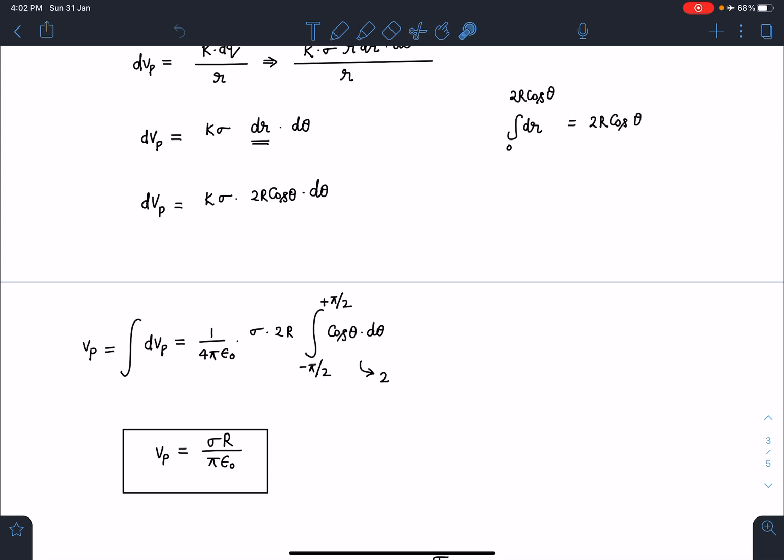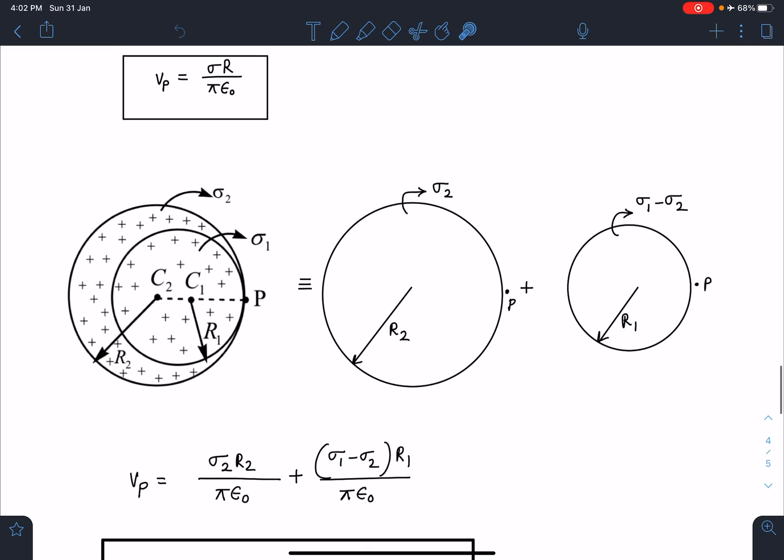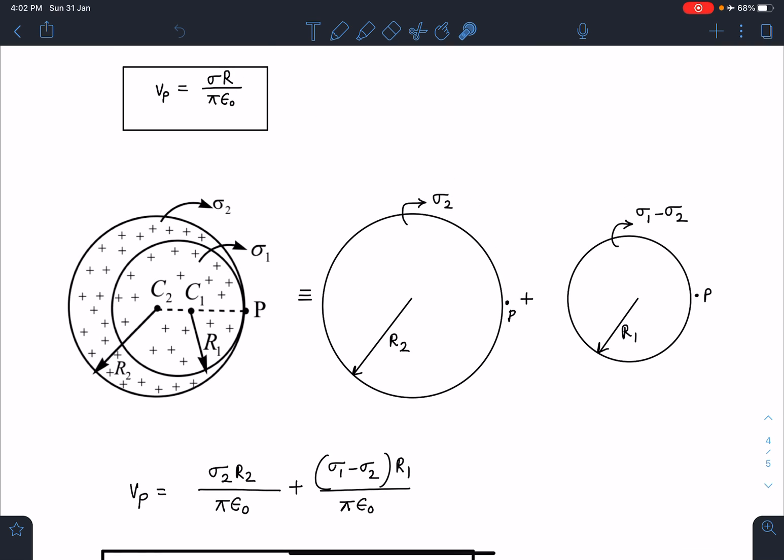Because now this original system I can write as superposition of two disks: one is having radius r2 and having a charge density of sigma 2, another one is having charge density of sigma 1 minus sigma 2.